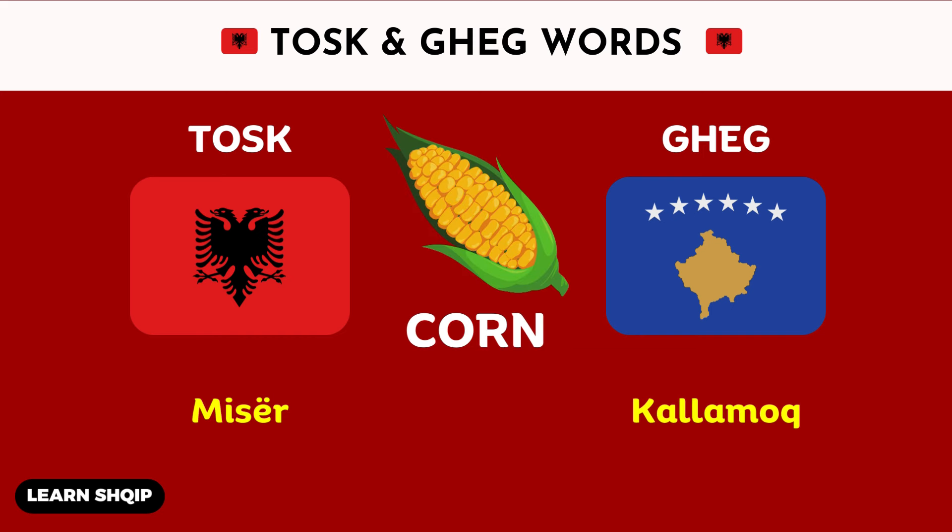Then we have the word corn. For corn, in Tosk, you will say Misr. And then in the Geg dialect, it is going to change to Kalamoc.